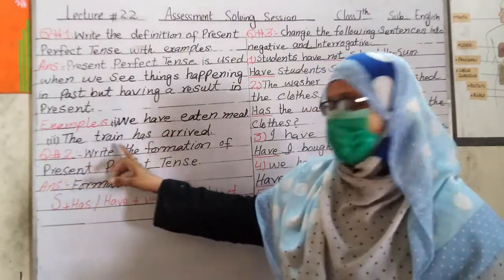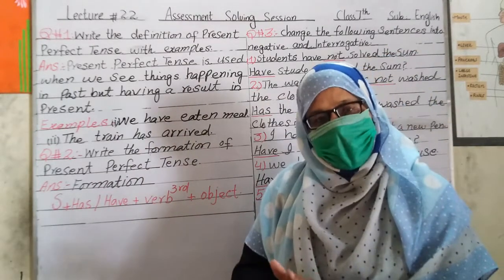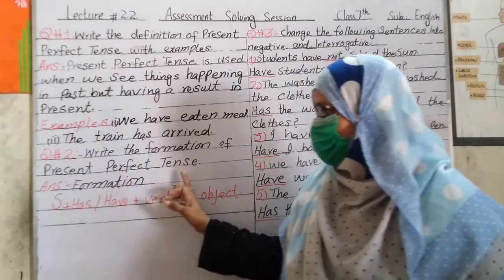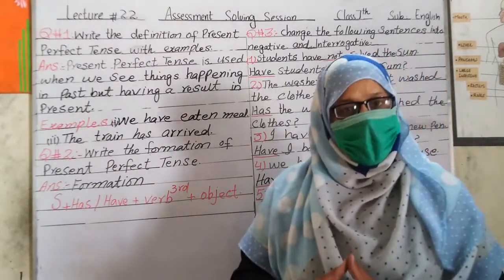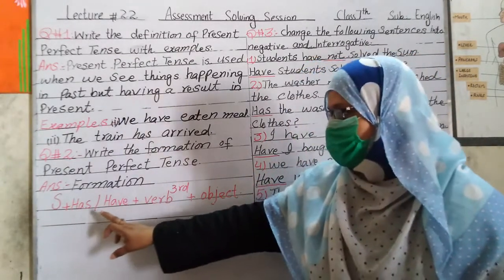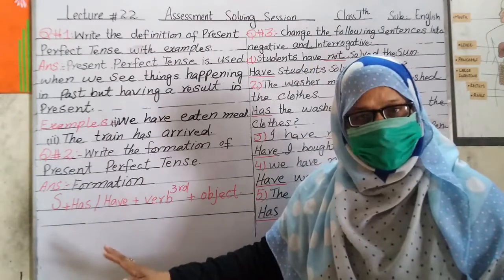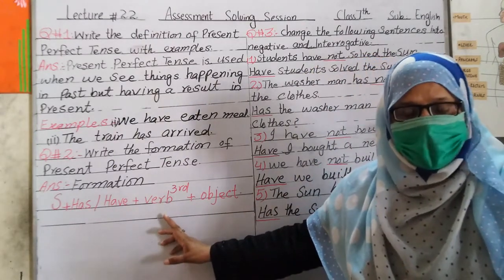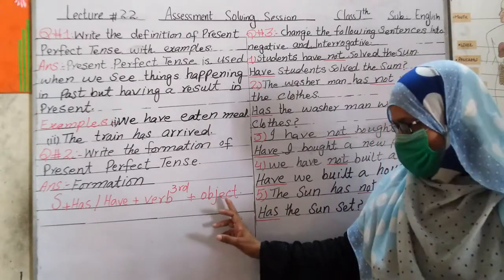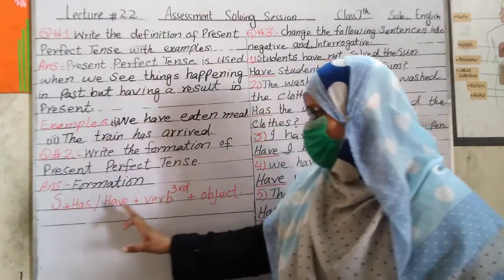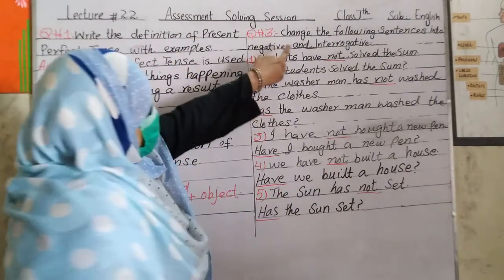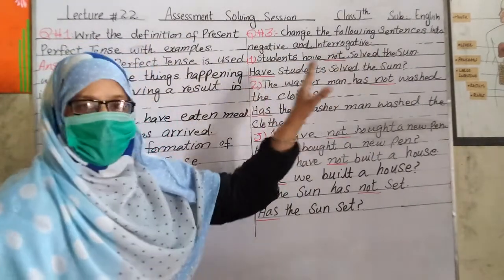Second example: 'The train has arrived' — گاڑی پہنچ چکی ہے۔ Question 2: Write the formation of present perfect tense. The formation is: Subject + has/have (helping verb) + third form of verb (past participle) + object. This completes the formation of present perfect tense.